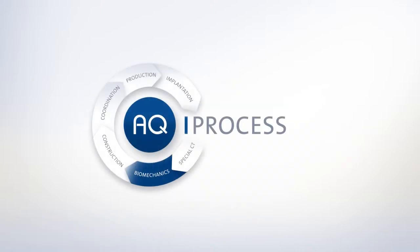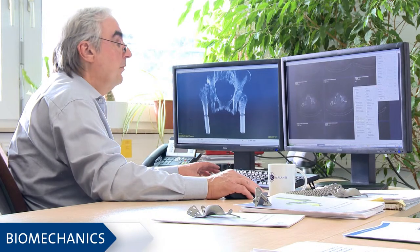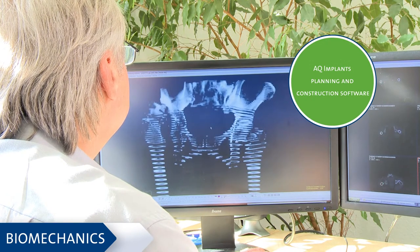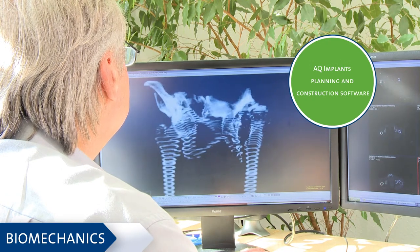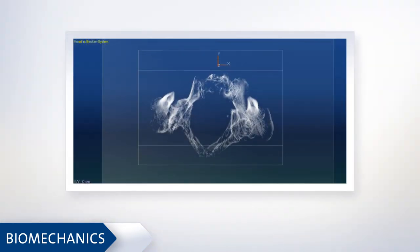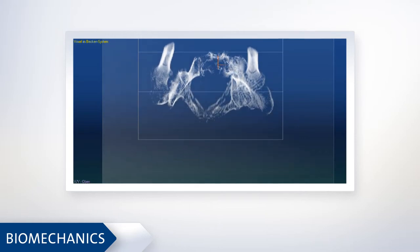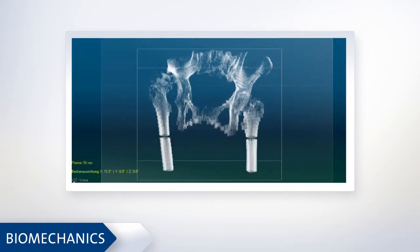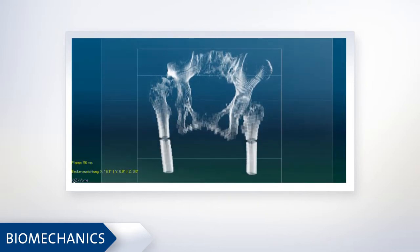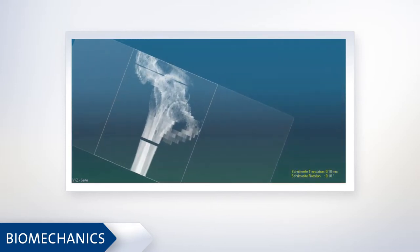Preoperative planning is performed on the basis of the acquired CT data. Biomechanical 3D planning is carried out using a planning and construction software developed by AQI Implants. At first, the orthograde alignment of the spine and pelvis is performed. Simultaneously, rotation around the longitudinal axis, around the sagittal axis, and around the transverse axis are adjusted.